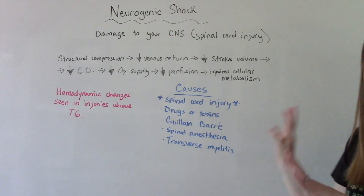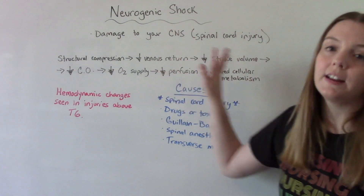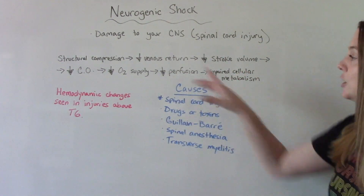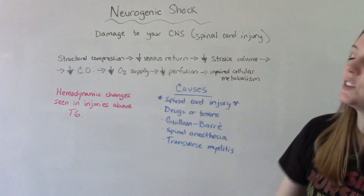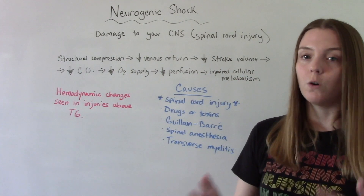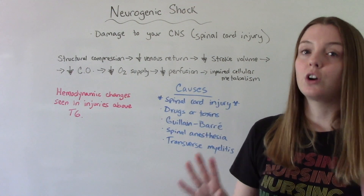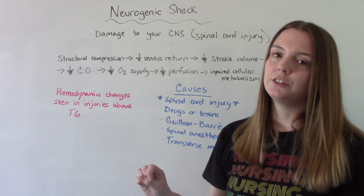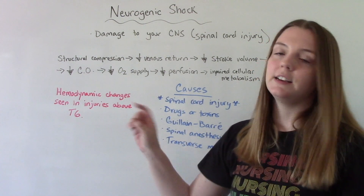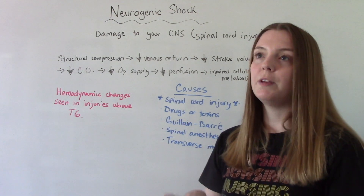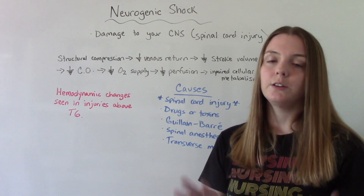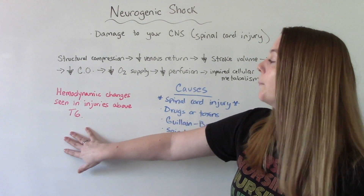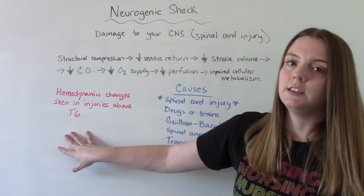The goal with neurogenic shock is to try and prevent this altogether from happening. But if your patient has it, we try to catch it as fast as we can — though it can happen really quickly. It kind of depends on the cause. Hemodynamic changes are seen in injuries above T6, so knowing that if it is a spinal cord injury related cause, these hemodynamic changes are more likely to be seen in injuries above level T6.